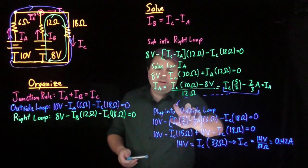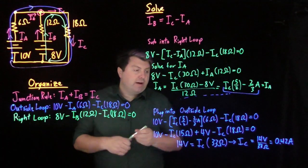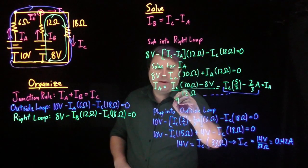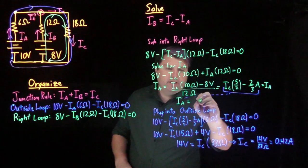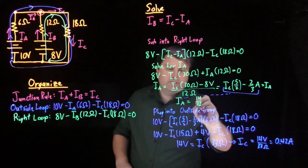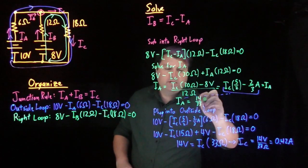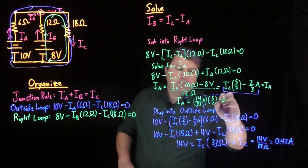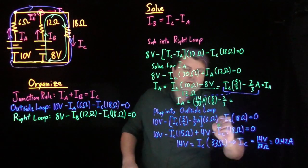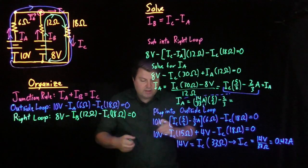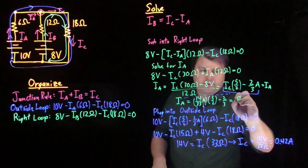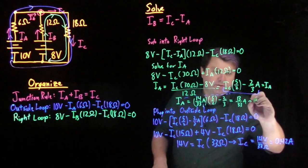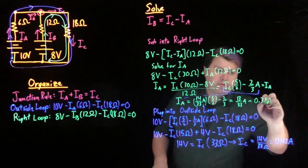Now what I can do is I can go back up here. I know that my Ic is 0.42 or 14 thirty-thirds. So I have that my Ia is now 14 thirty-thirds amps times 5 halves minus 2 thirds. A little bit of math and I will get that this is 13 thirty-thirds of an amp or roughly 0.39 amps.